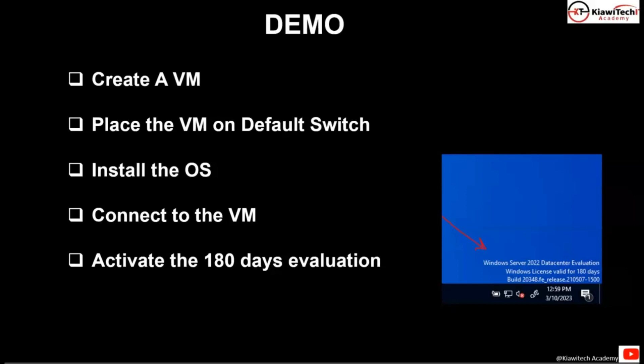In the demo part, what are we going to do today? We are going to create a virtual machine. We are going to place this virtual machine on the default switch. The reason why we're doing that on the default switch is to be able to make a connection with the internet so as to enable the 180-day Microsoft evaluation edition.